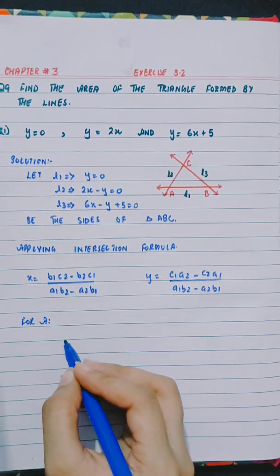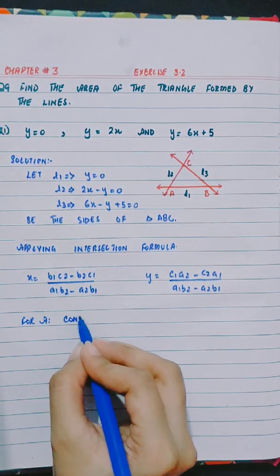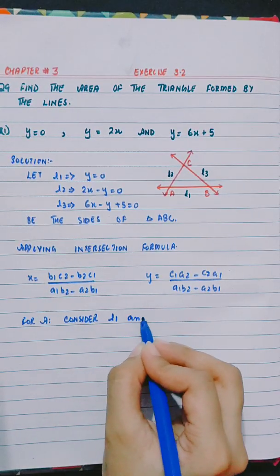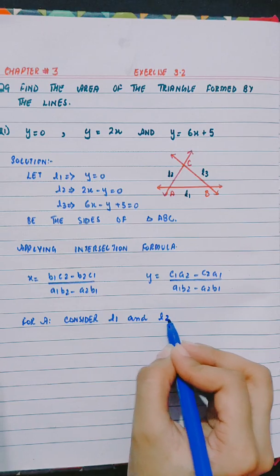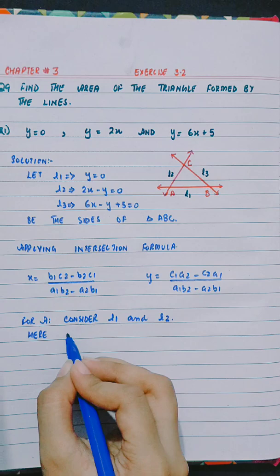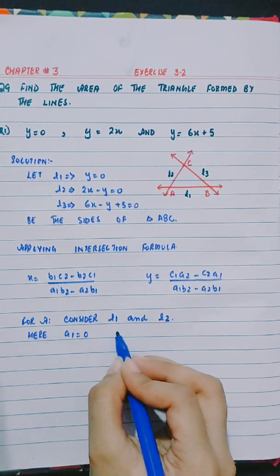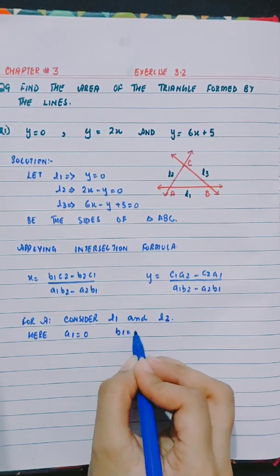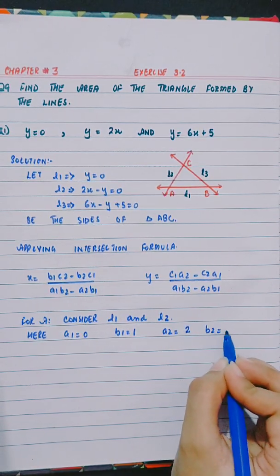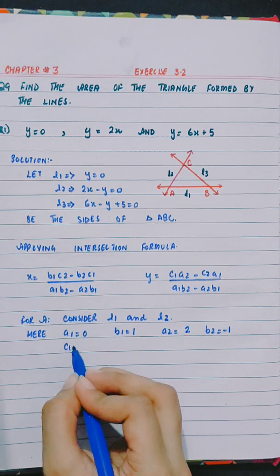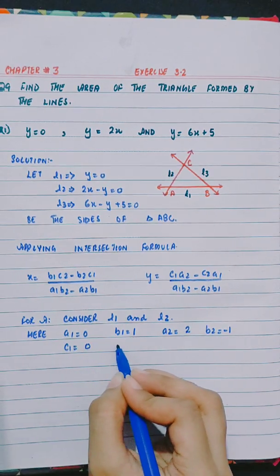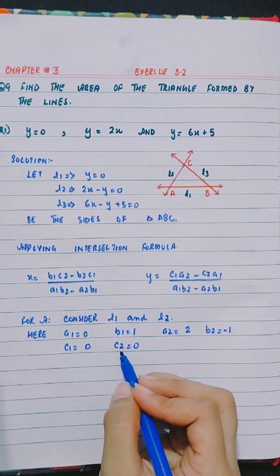For point A, consider L1 and L2. Here a1 is 0, b1 is 1, a2 is 2, b2 is minus 1, c1 is 0, and c2 is 0.